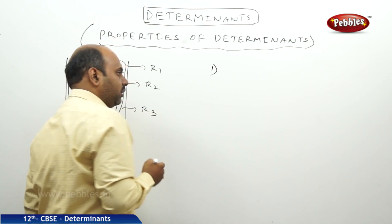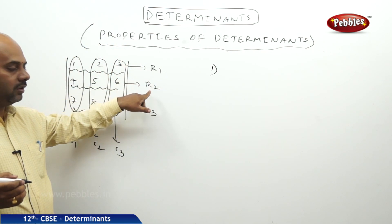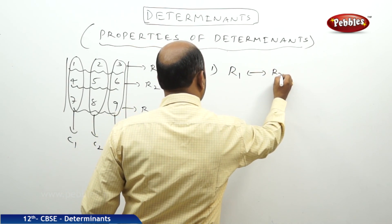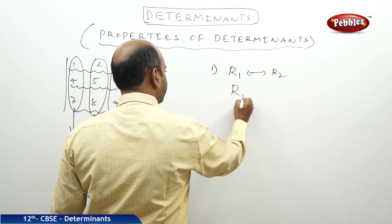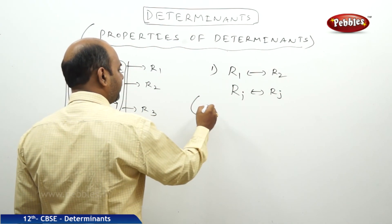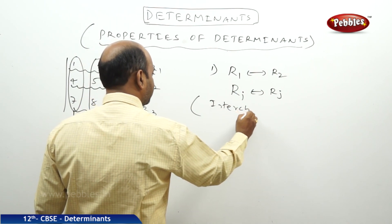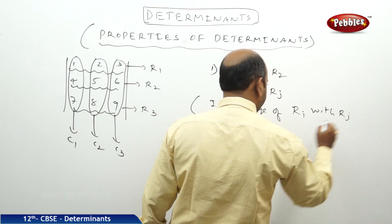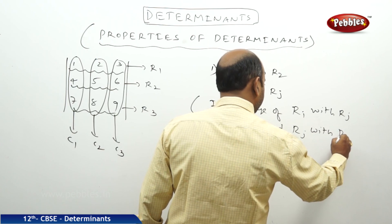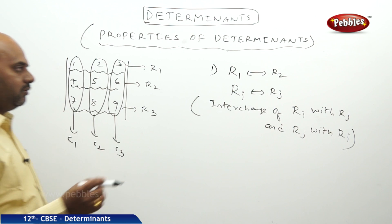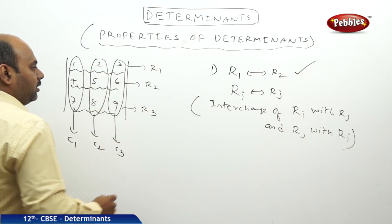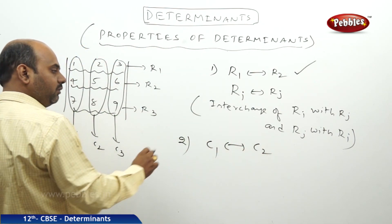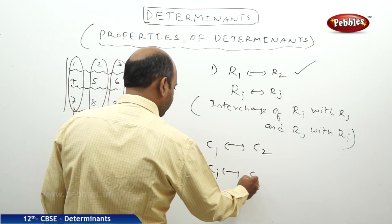Sometimes we want to interchange rows — for example, placing R2 where R1 was and R1 where R2 was. We use the symbol R1 ↔ R2. In general, Ri ↔ Rj denotes the interchange of row i with row j. Similarly, column interchange is denoted C1 ↔ C2, or in general Ci ↔ Cj.